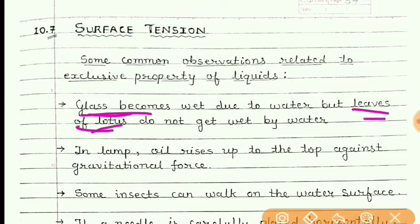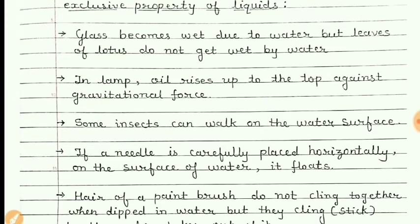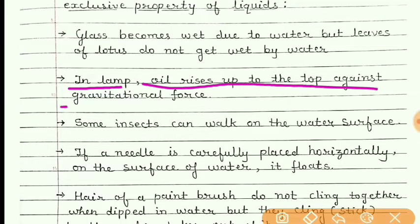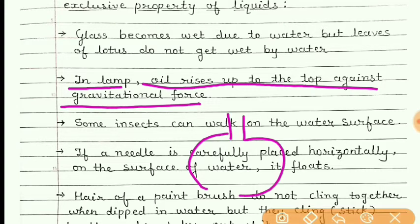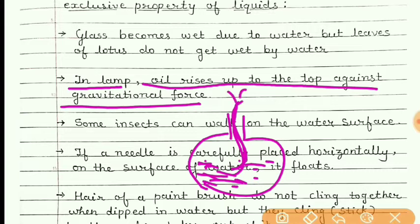We have also seen that in a lamp, oil rises up to the top against gravitational force. There is oil inside the lamp and there is a cotton wick. If you light it, the oil will rise in the upward direction against the gravitational force, and that is due to the surface tension of the oil.